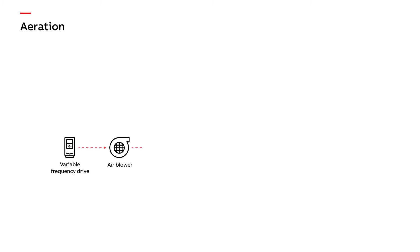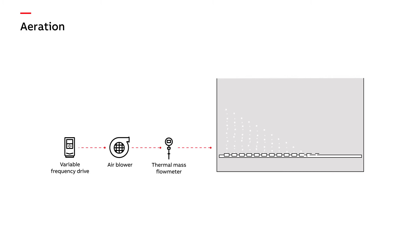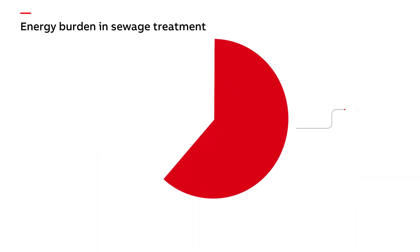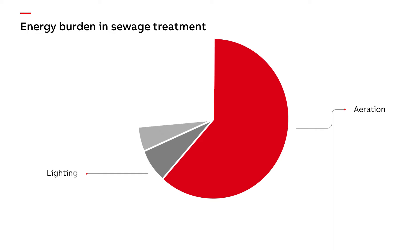In wastewater treatment, aeration is the process of pumping air through effluent waste to increase its dissolved oxygen level, in order to promote the growth of microorganisms that break down organic matter. Typically, the aeration process accounts for around two-thirds of energy usage in wastewater treatment.